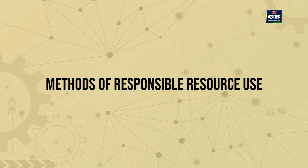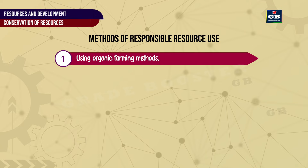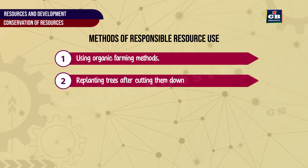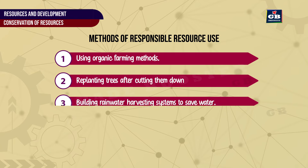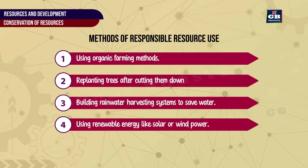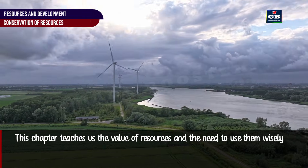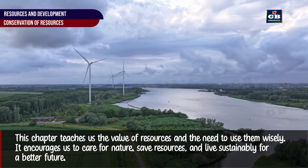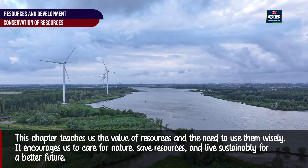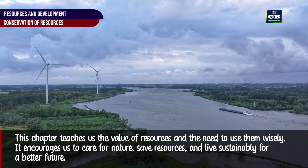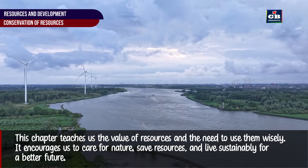Methods of responsible resource use: 1. Using organic farming methods. 2. Replanting trees after cutting them down. 3. Building rainwater harvesting systems to save water. 4. Using renewable energy like solar or wind power. This chapter teaches us the value of resources and the need to use them wisely. It encourages us to care for nature, save resources, and live sustainably for a better future.